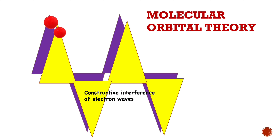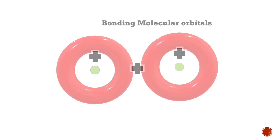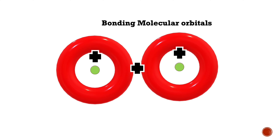Welcome to Arura Chemistry for Everyone. According to molecular orbital theory, when two atomic orbitals combine they form two molecular orbitals called bonding molecular orbital and antibonding molecular orbital.